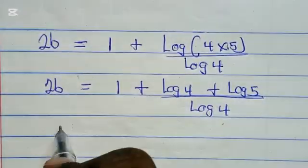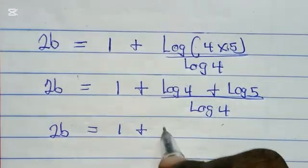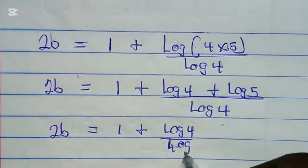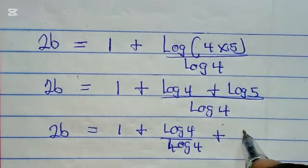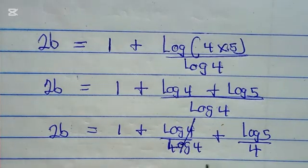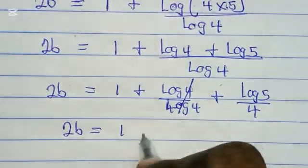Let's separate the division. We have 2b = 1 + (log 4)/(log 4) + (log 5)/(log 4). This cancels, giving us 2b = 1 + 1...